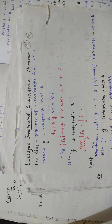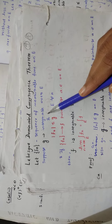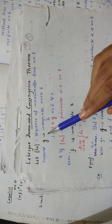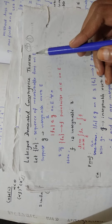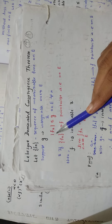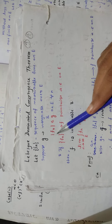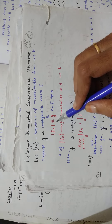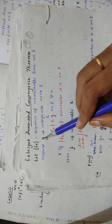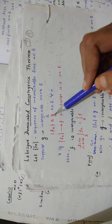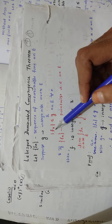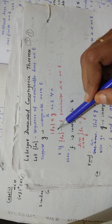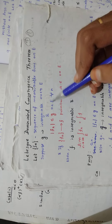And also you have another function G, and this function G is integrable over E. Another condition: modulus of Fn is less than or equal to G on E for all N. That means |F1| ≤ G, |F2| ≤ G, |F3| ≤ G, |F4| ≤ G, up to |Fn| ≤ G — for all N, on E.